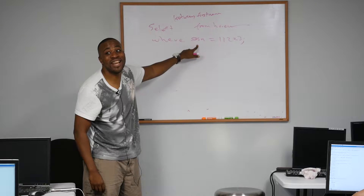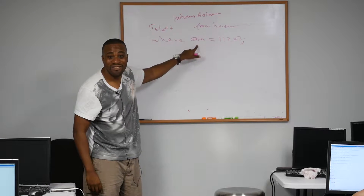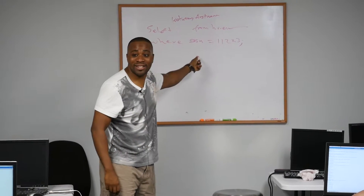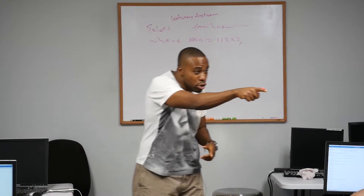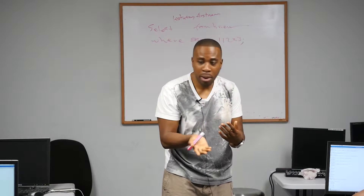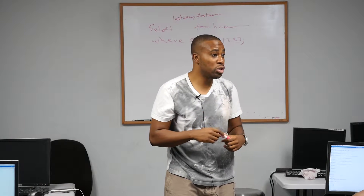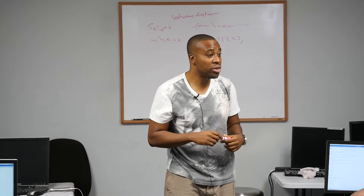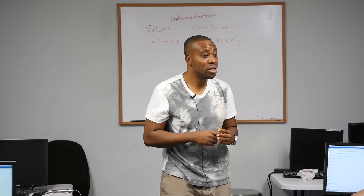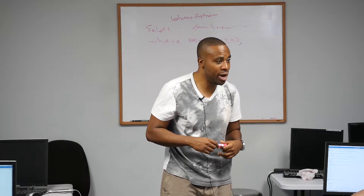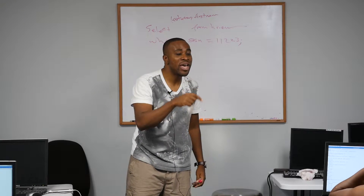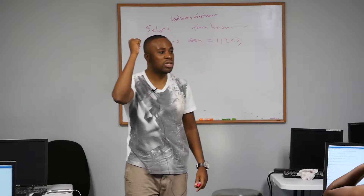If there is no index on the SSN column, Oracle — just like going through each page — would have to do a full scan. It might take Oracle like 30 minutes to go through a million rows. A lot faster than a month, but it's still super slow. But with an index, what would take 30 minutes now takes half a second. It knows exactly where to go.